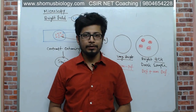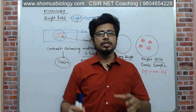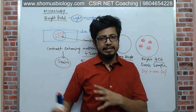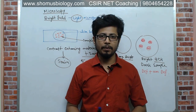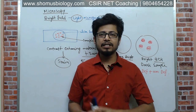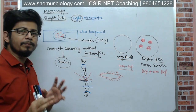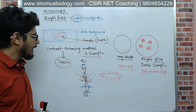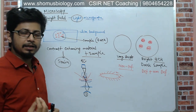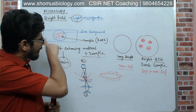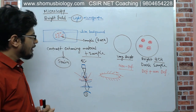Hello friends, welcome back to another video tutorial from Tromus Biology. In this video lecture we want to talk about dark field microscopy. In this series of videos we are talking about microscopy principles and mechanism of action. In the last video we talked about bright field microscopy, where we visualize the sample as a dark colored component and the background as a very white, heavily lit component.